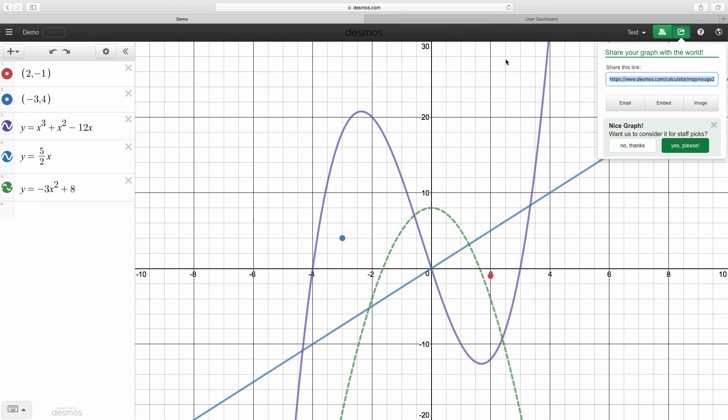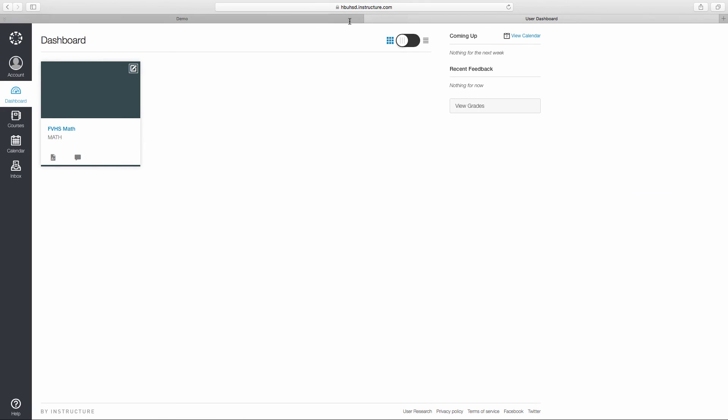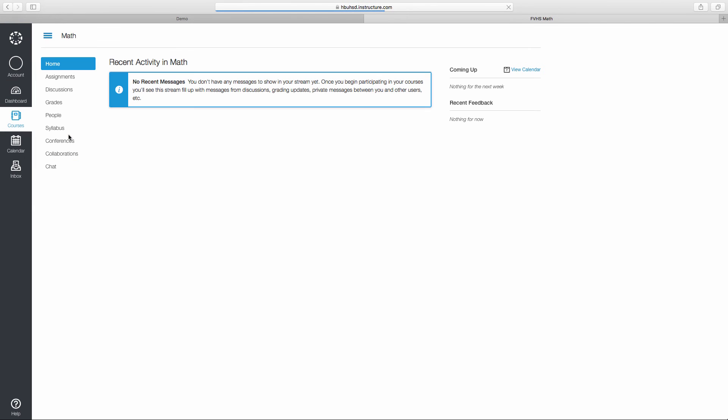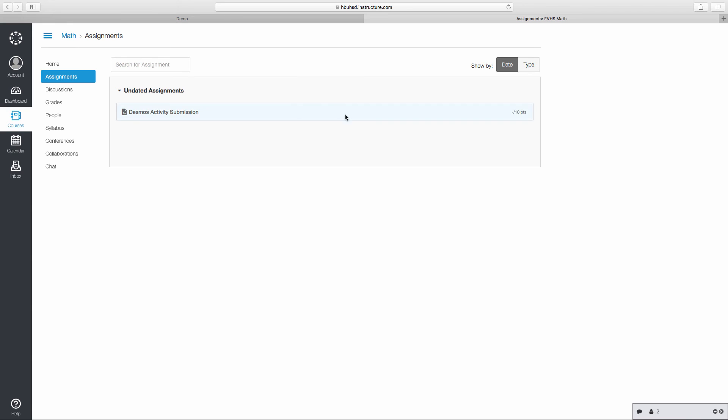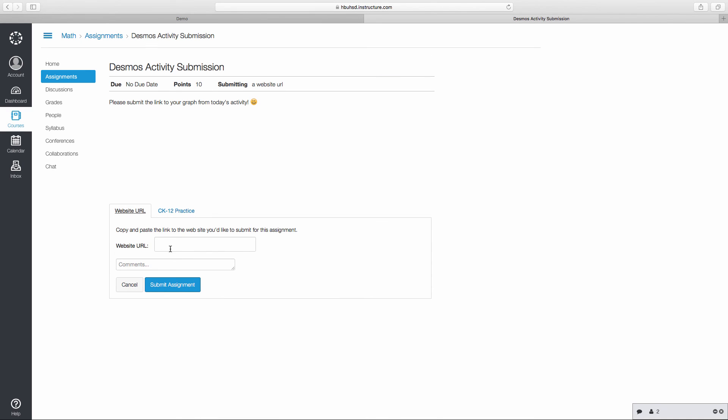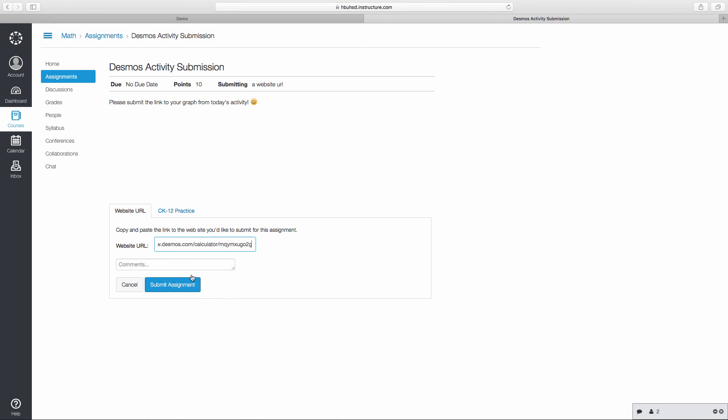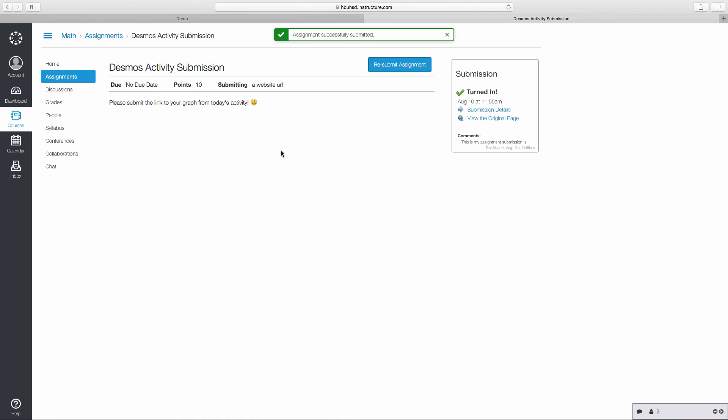So now we're going to go into Canvas and submit our link. So to submit the assignment, we're going to go into our Canvas page and we're going to click into our math course. Go under Assignments and you'll see the Desmos activity submission. So you're going to click here. And it says, please submit the link to your graph from today's activity. So we're going to click the blue button to submit assignment and it gives us the option to submit our URL. So we're going to use the URL that we had from our share option and we're going to paste it in right here. And then click, if you want, you could say, this is my assignment submission, smiley face. Click submit and now it has been sent off to your teacher.